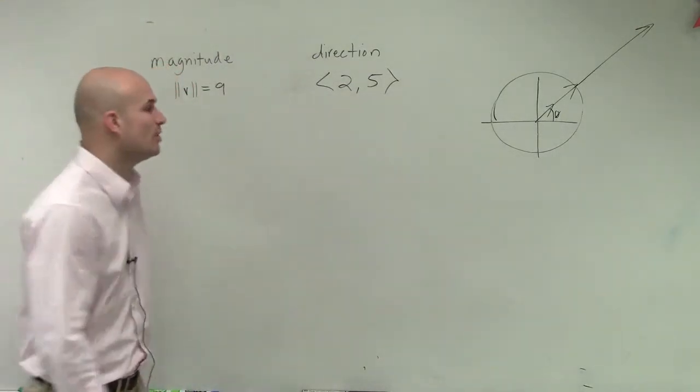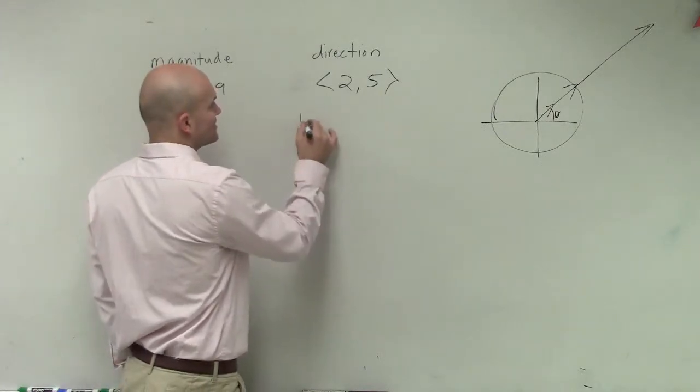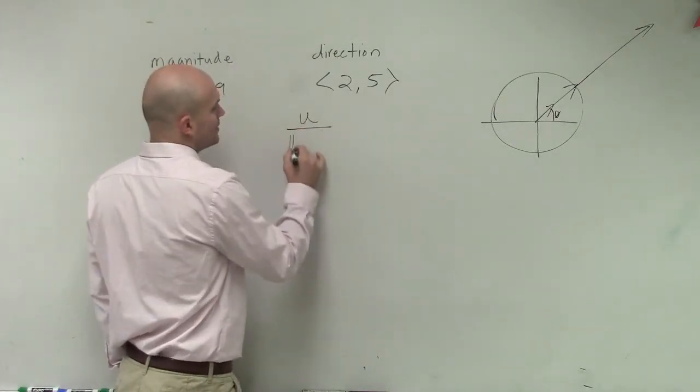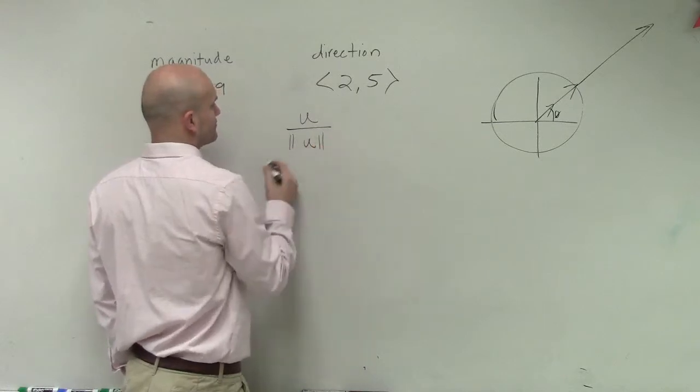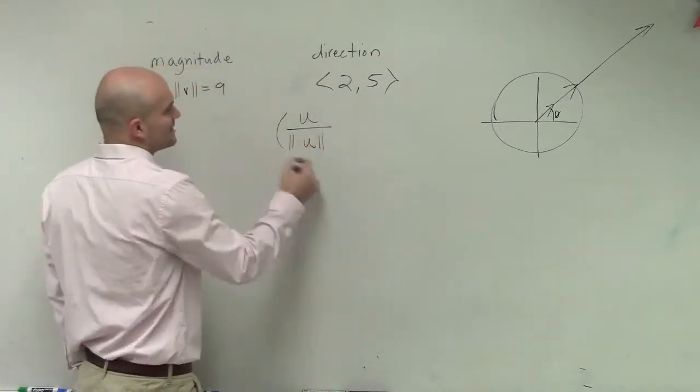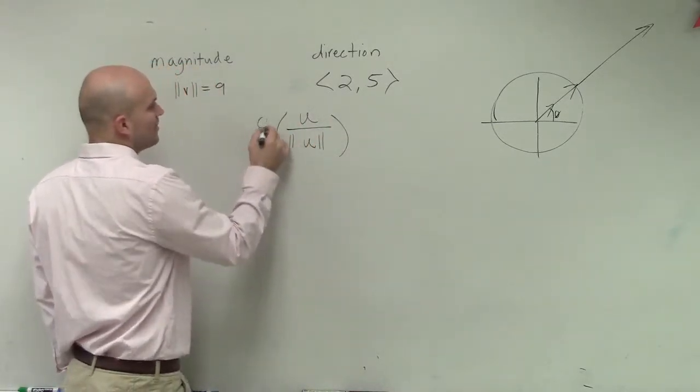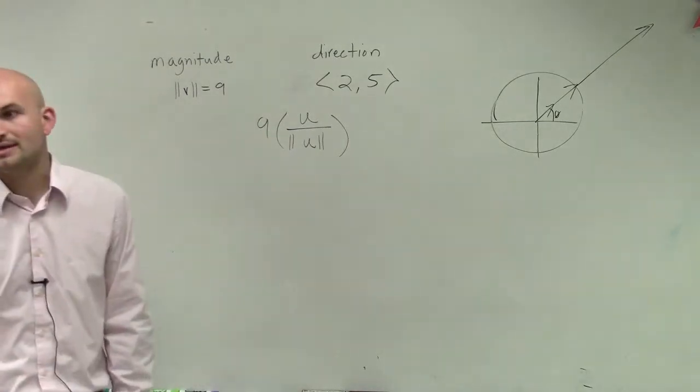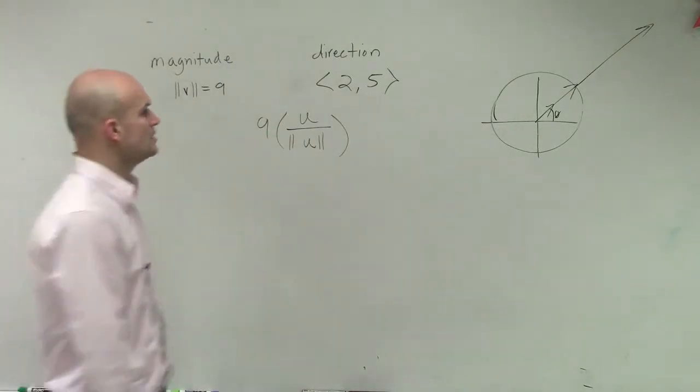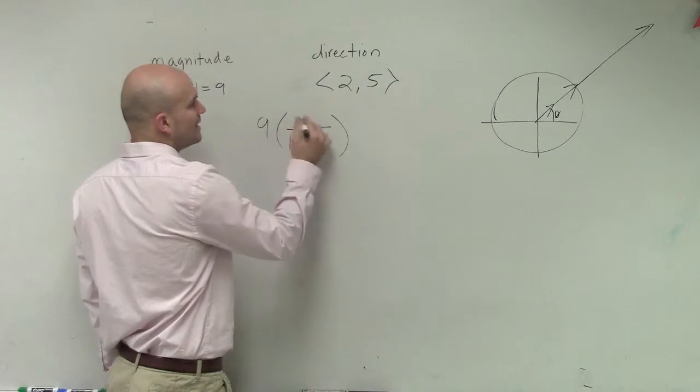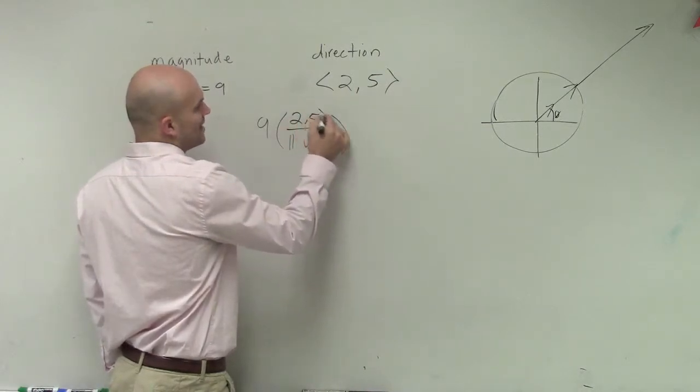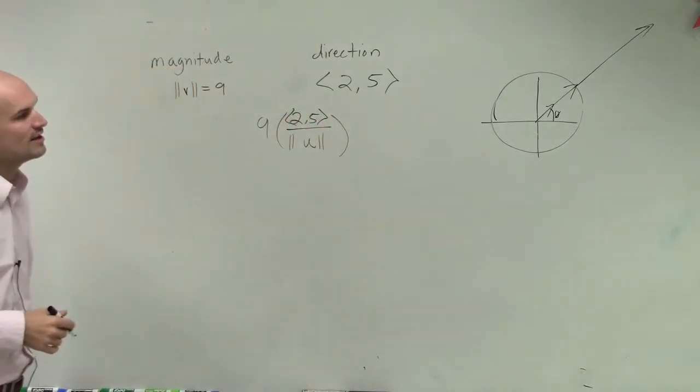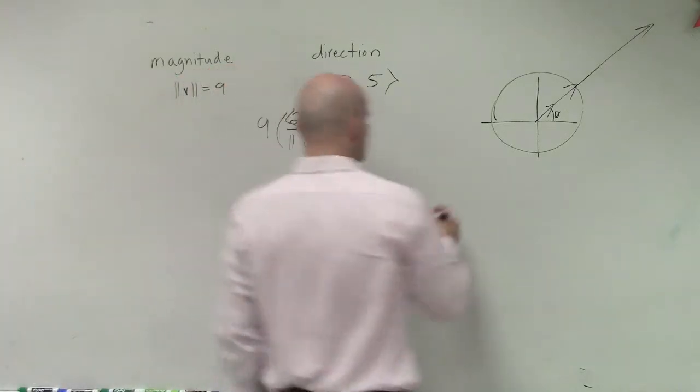So what I'm first going to want to do is be able to determine what my unit vector is going to be for my vector that's in the component form of 2 comma 5. So remember to find the component form or the unit vector, I'm going to take u over the magnitude of u.